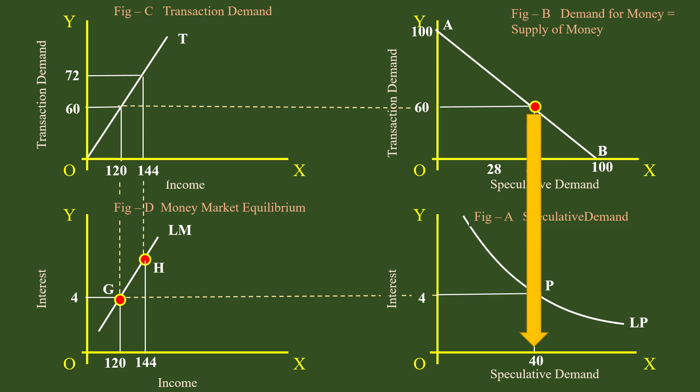Already, 40 rupees at 4% interest has been marked for speculative motive. Unless it releases the excess amount of 12 rupees, equilibrium cannot be established in the money market. Speculative motive immediately responds to it. It starts selling securities and bonds. The security and bond prices fall. The community moves up along the LP curve and reach the point R.